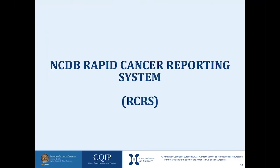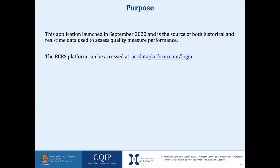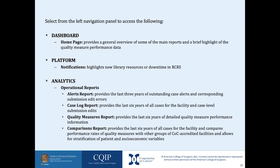The next web tool we will be covering is the NCDB Rapid Cancer Reporting System, also known as RCRS. This application launched in September of 2020 and is the source of both historical and real-time data used to assess quality measure performance. The RCRS platform can be accessed at acsdataplatform.com/login. Once logged in, you can use the left navigation panel to access the dashboard home page, platform notifications which highlights new library resources or downtime in RCRS, and analytics which houses the reports.